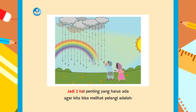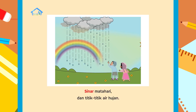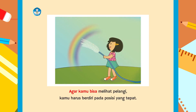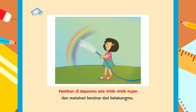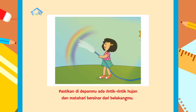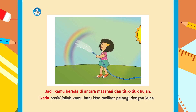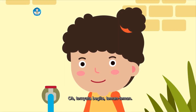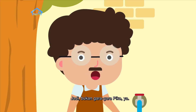Jadi, dua hal penting yang harus ada agar kita bisa melihat pelangi adalah sinar matahari dan titik-titik air hujan. Dan matahari bersinar dari belakang, jadi kamu berada di antara matahari dan titik-titik hujan. Pada posisi inilah kamu baru bisa melihat pelangi dengan jelas. Oh, ternyata begitu teman-teman. Jadi, bukan gara-gara Piko ya!